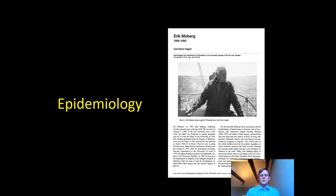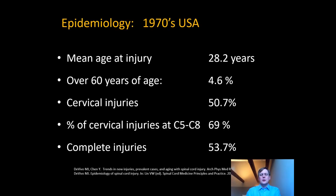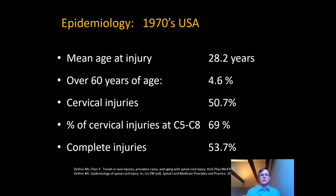There's a picture of Moberg on his boat. In terms of epidemiology, the media and popular view of tetraplegia is that it occurs in a young, fit male population involved in risk-taking or violent activity. If you look at data from mid-1970s USA, the mean age was 28, very few over 60, the majority in the mid-cervical region — which from a reconstructive point of view is the zone where you have something to work with and something that requires improving — and complete injuries were over half.